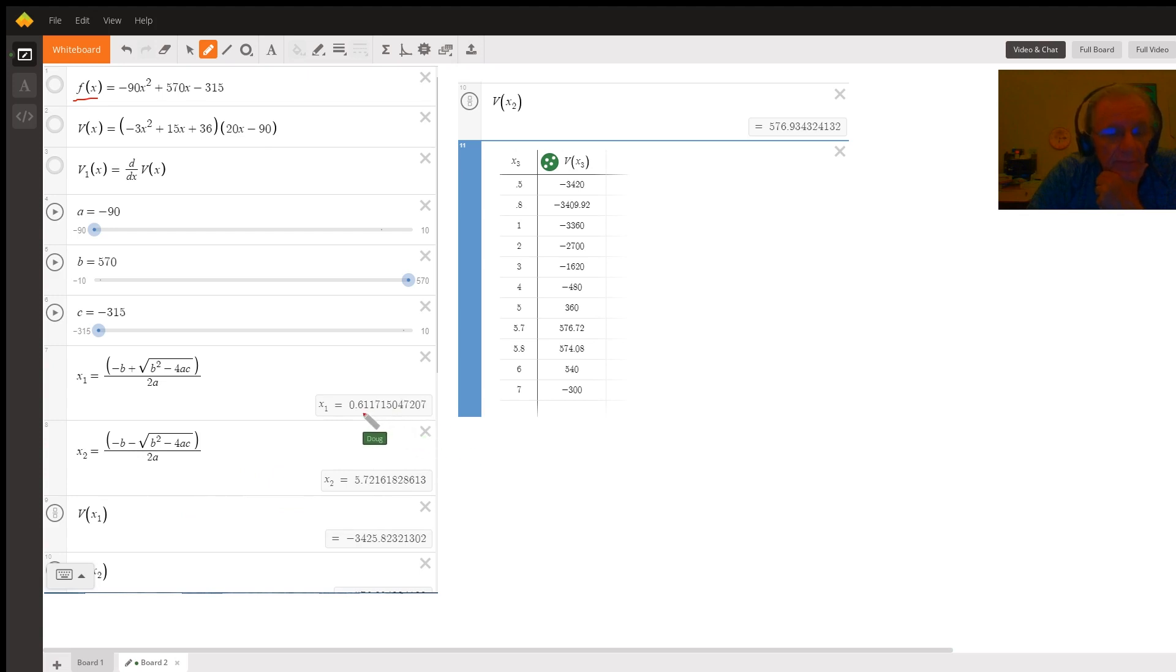And there they are, 0.6117. Then I found the volume at x sub 1 and got negative 3,425 and the volume at x sub 2. There's your answer right there. 576.93, whatever the units were.